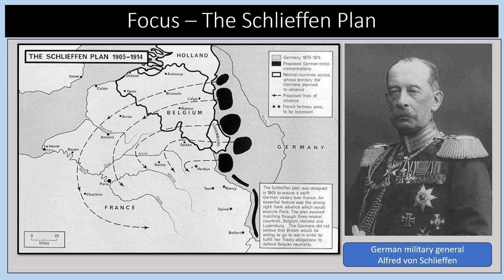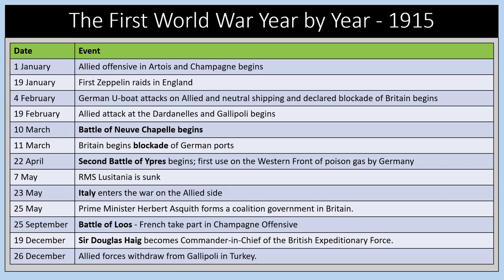The Schlieffen Plan, named after German military general Alfred von Schlieffen, was that Germany would take France by surprise by attacking through neutral Belgium, outflanking Paris and taking France very quickly. Germany would then send its forces east to fight the Russians, avoiding a war on two fronts. It didn't work — German forces got bogged down in Belgium, lines of trenches were constructed on the Western Front, and Germany ended up fighting on two fronts: in the west against France and Britain, and in the east against the Russians.